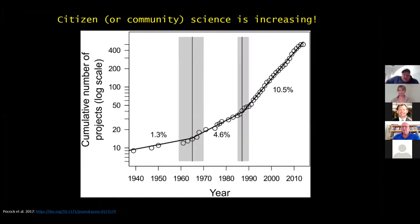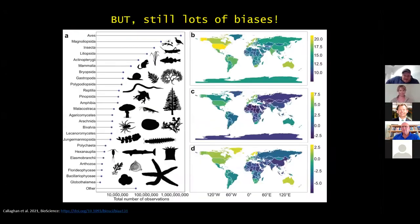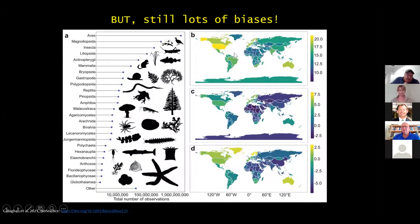As we all know, citizen science is increasing dramatically — lots and lots of data, which is really great news. But there are still lots of biases, especially with a focus on biodiversity data. Birds are way overrepresented compared to other taxa. There are also biases in space across the world: countries with the highest GDP tend to have the highest observations per capita, which is potentially an issue.